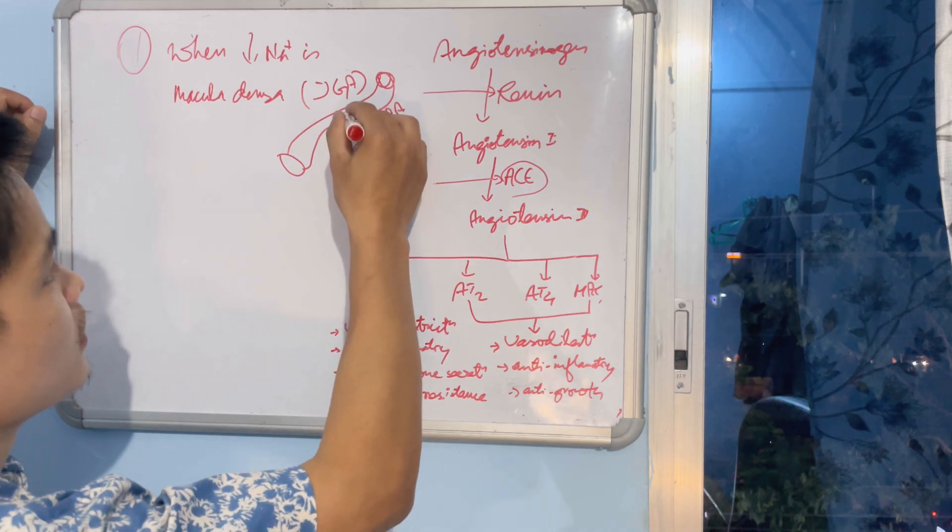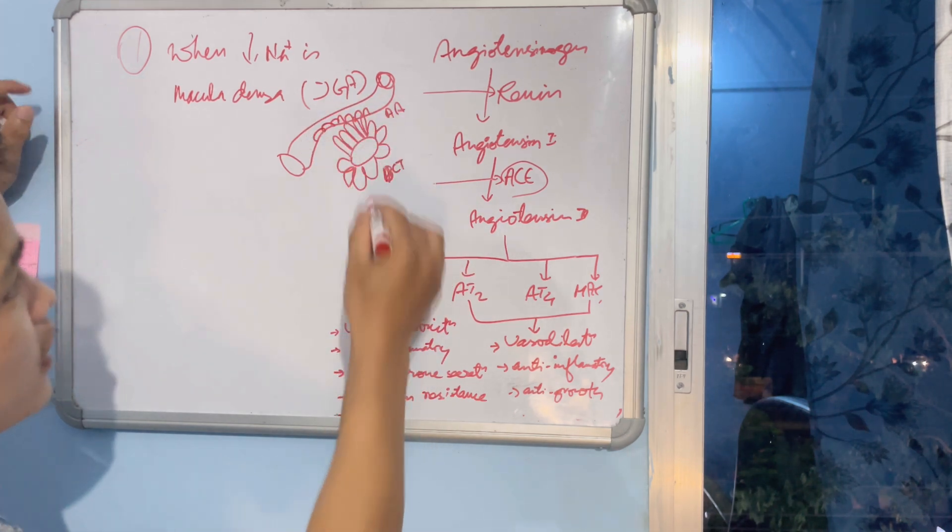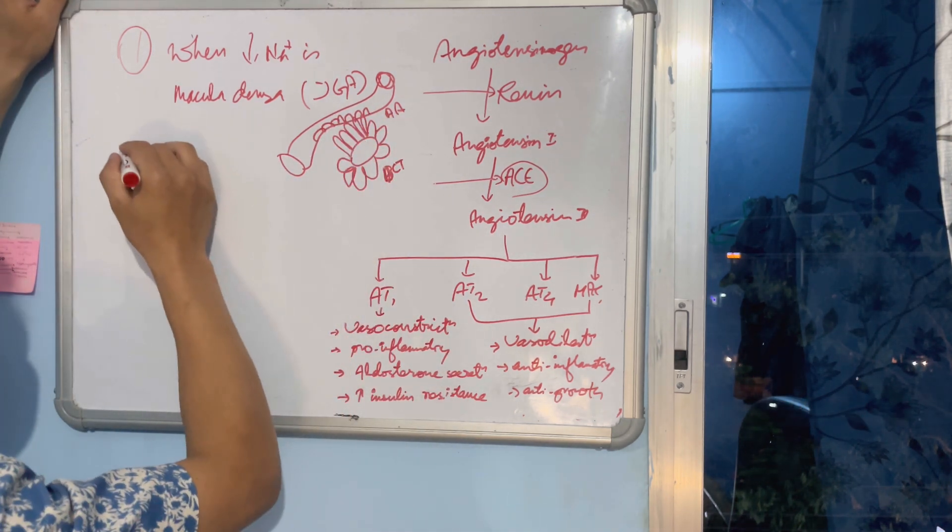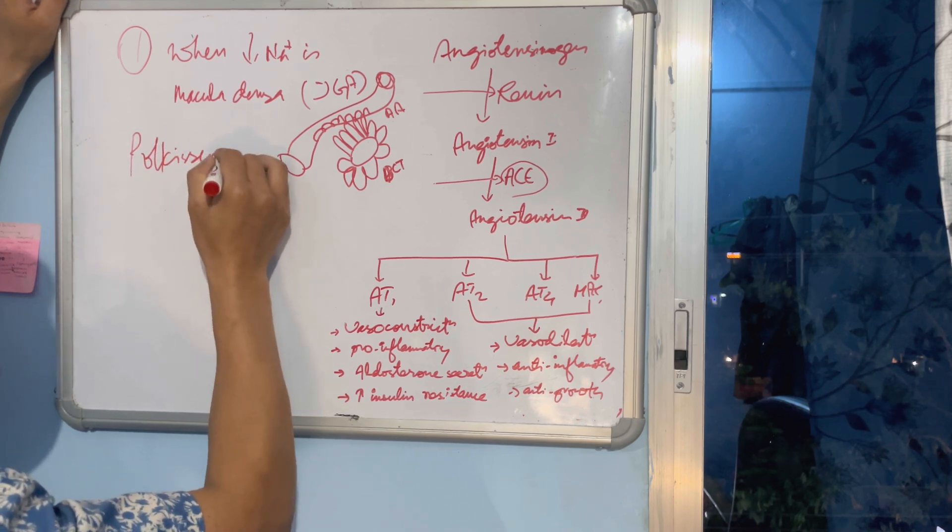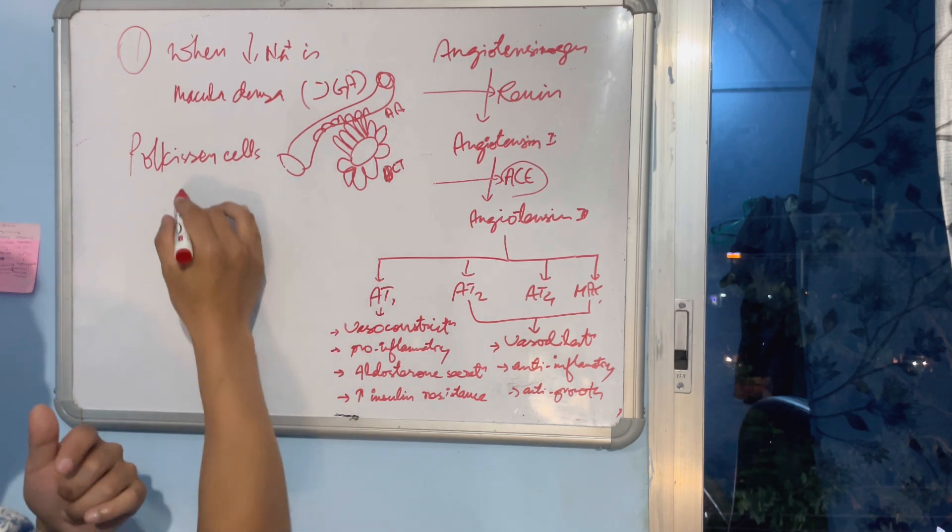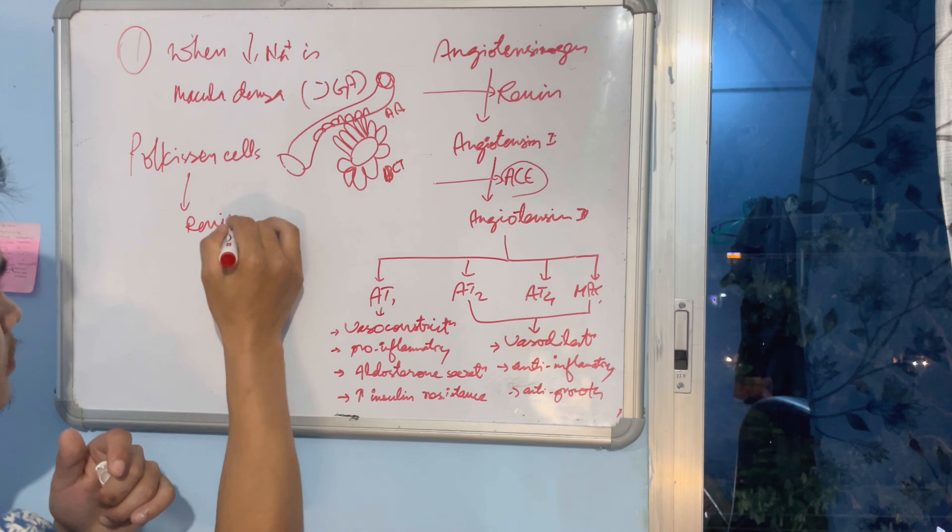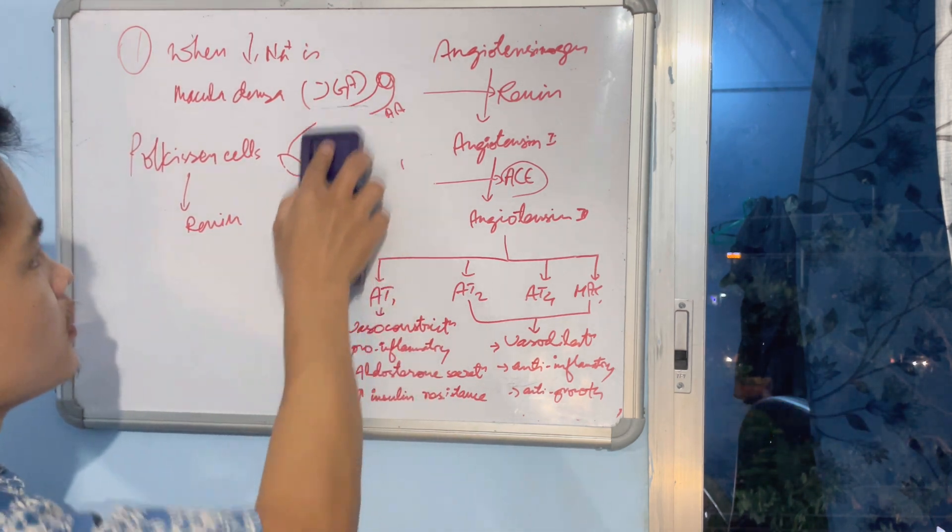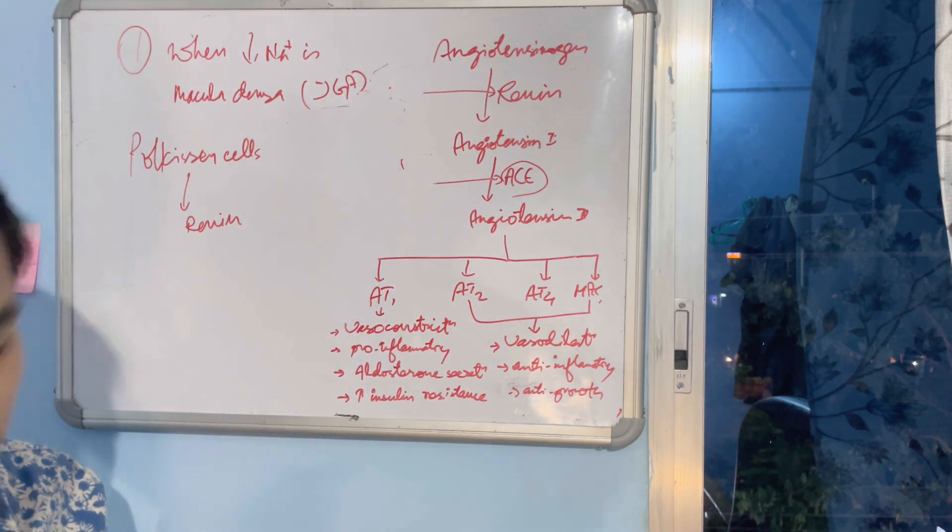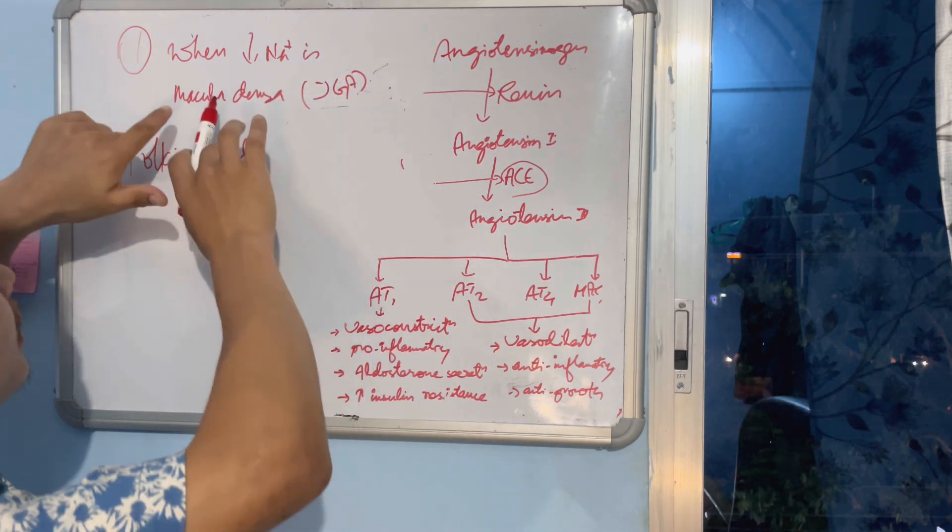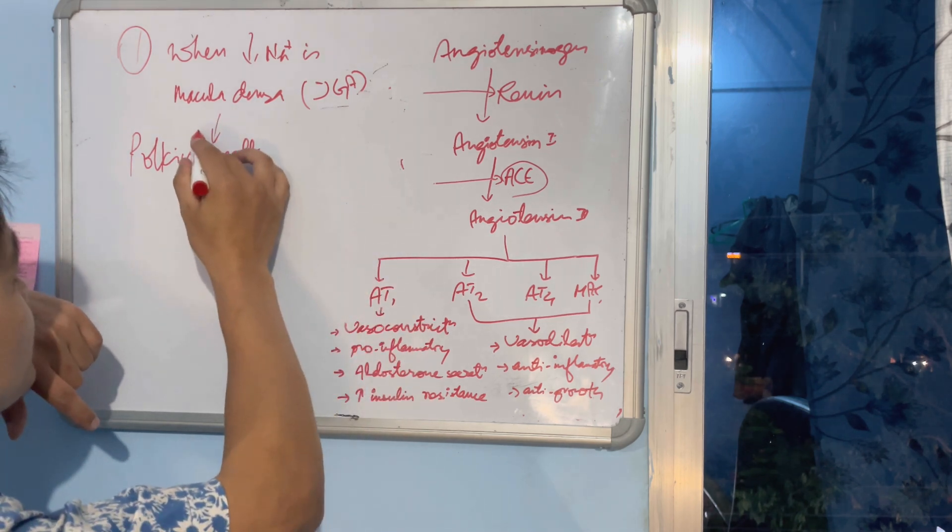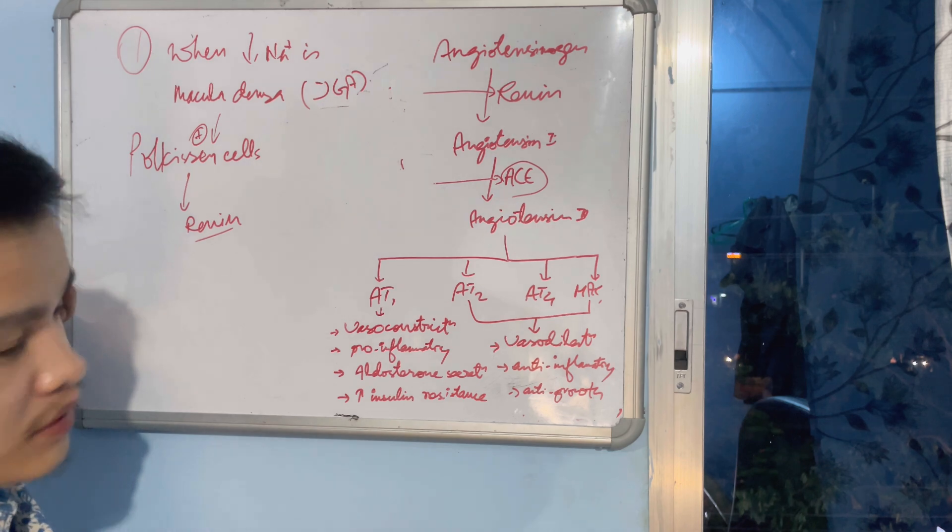Here they have modified cells - the arteriole has modified cells. What do we call these cells? We call these cells juxtaglomerular cells, and these juxtaglomerular cells, they release renin. And this renin will convert angiotensinogen to angiotensin II, and all these effects.